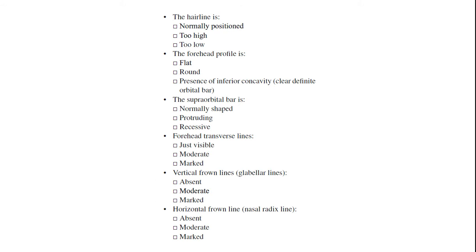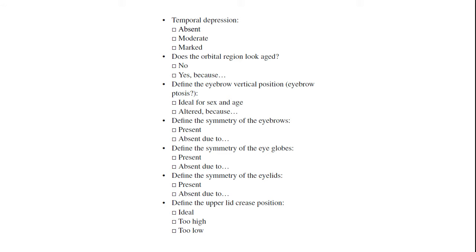The hairline is normally positioned, too high, or too low. The forehead profile: flat, round, or with inferior concavity. Define the supraorbital bar: normally shaped, protruding, or recessive. Forehead transverse lines: just visible, moderate, or marked. Vertical frown lines or glabella lines: absent, moderate, or marked. Horizontal frown lines or nasal radix lines: absent, moderate, or marked. The temporal depression: absent, moderate, or marked.